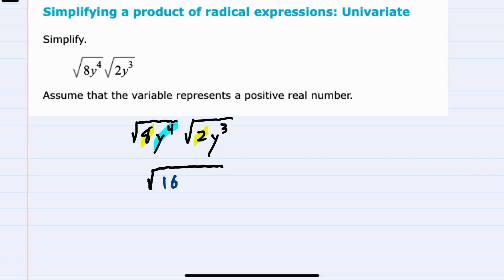And we also have a y^4 times a y^3, which multiplying, we add the exponents to get y^7. And from here, we can continue to simplify.